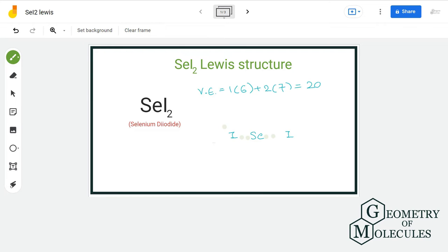As you can see here, each iodine atom needs six more electrons for complete octet. So we'll assign six electrons to each iodine atom.